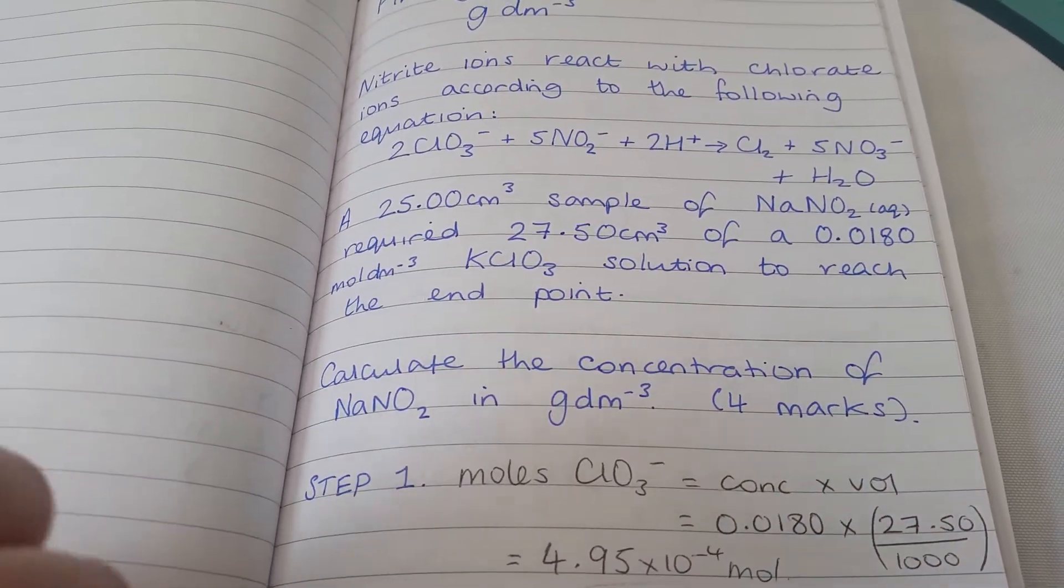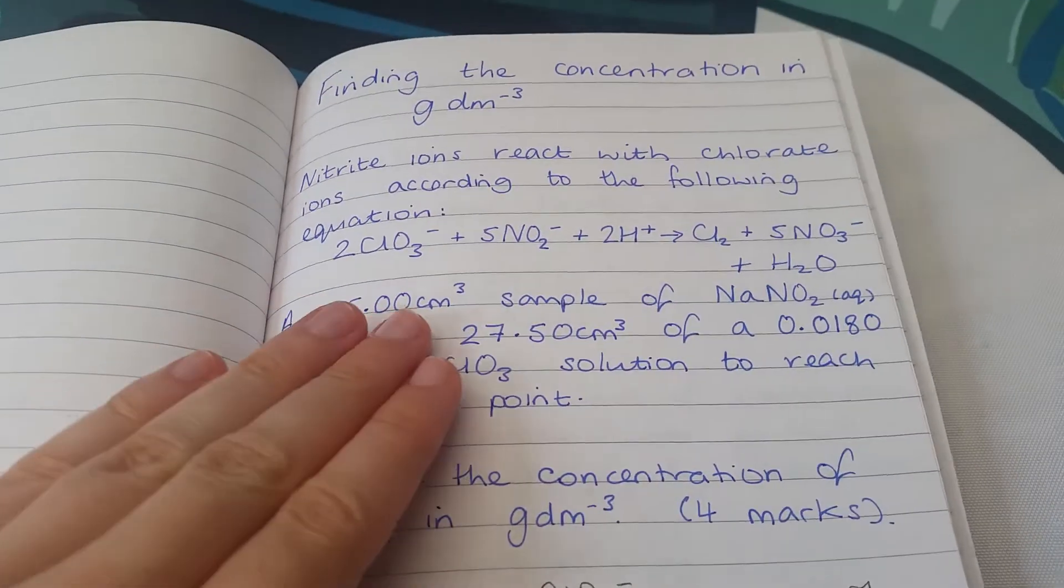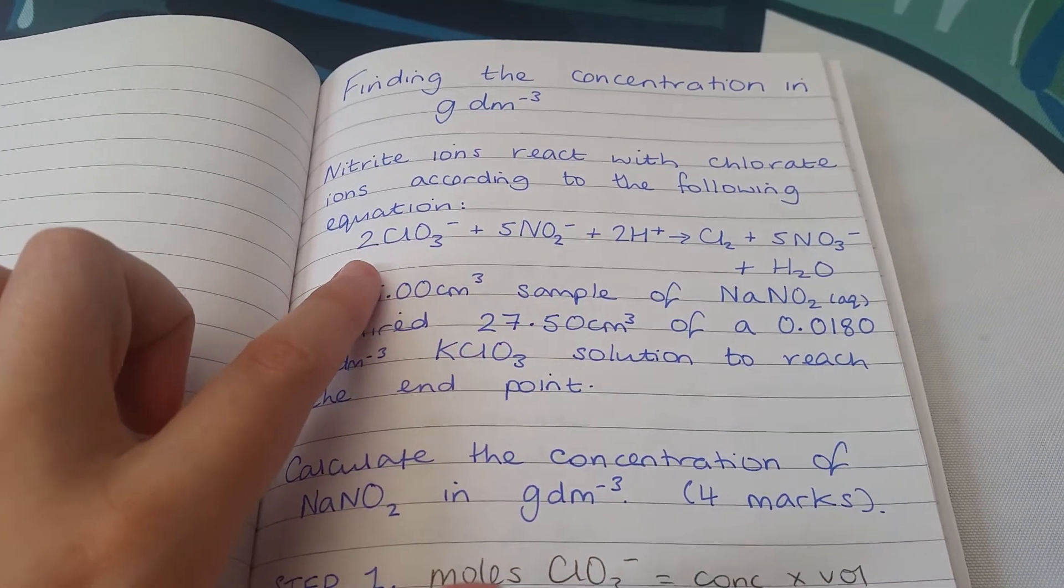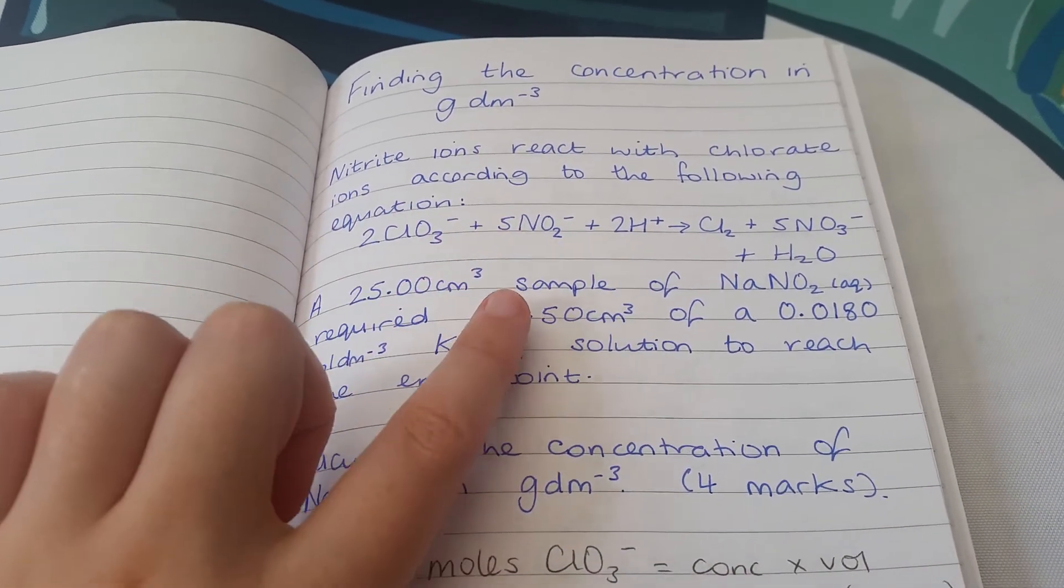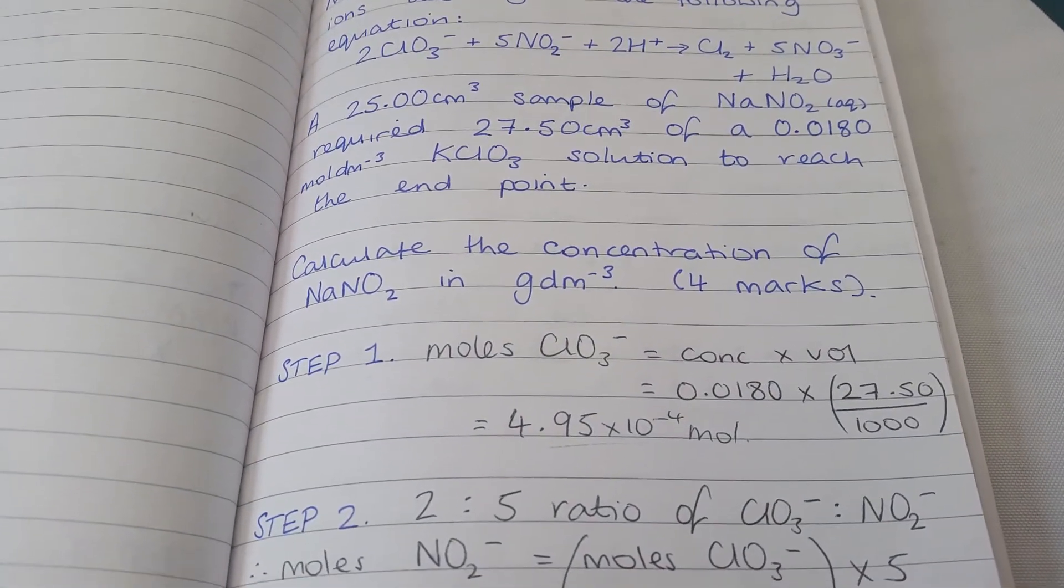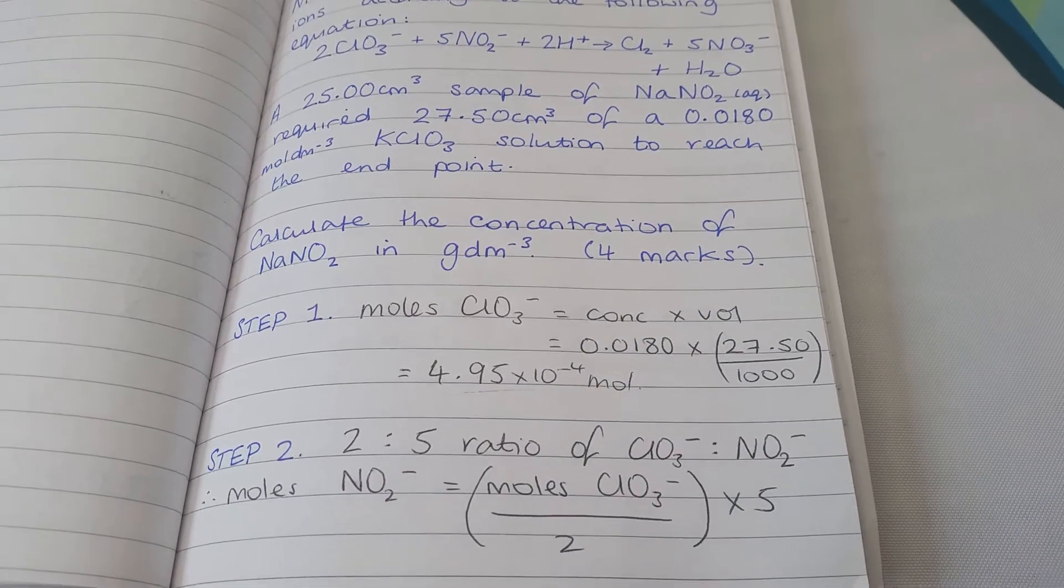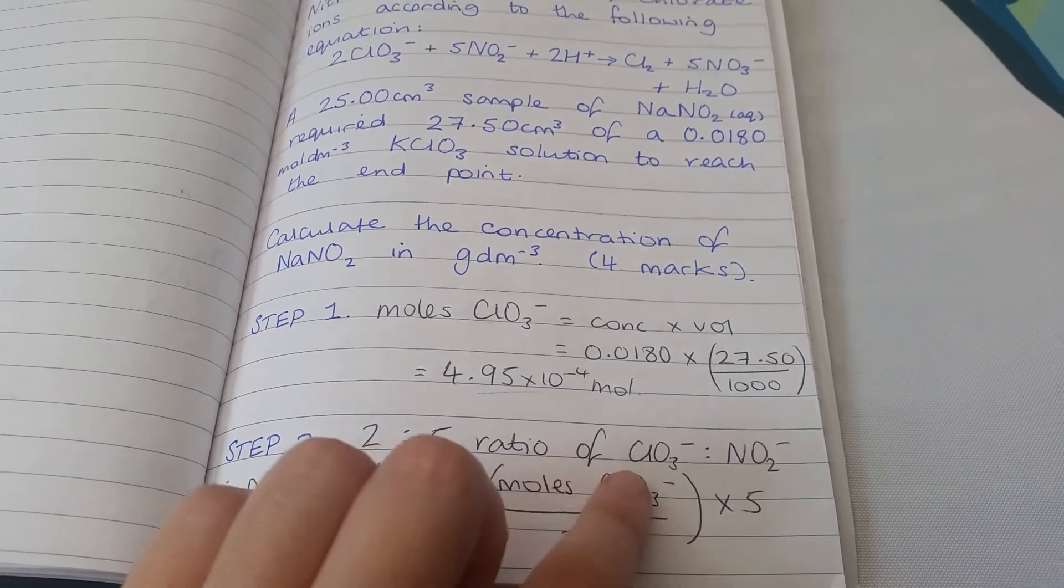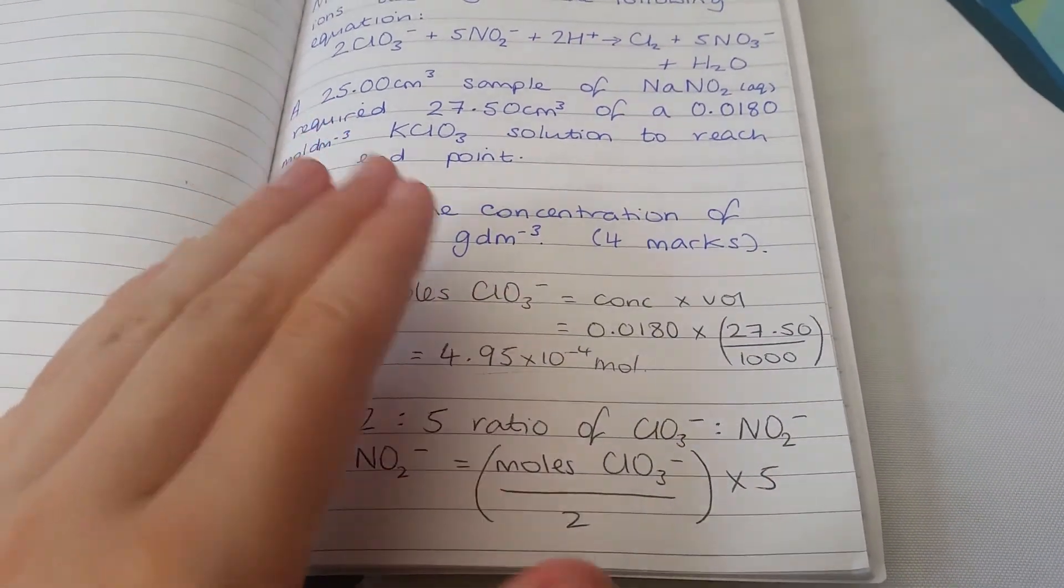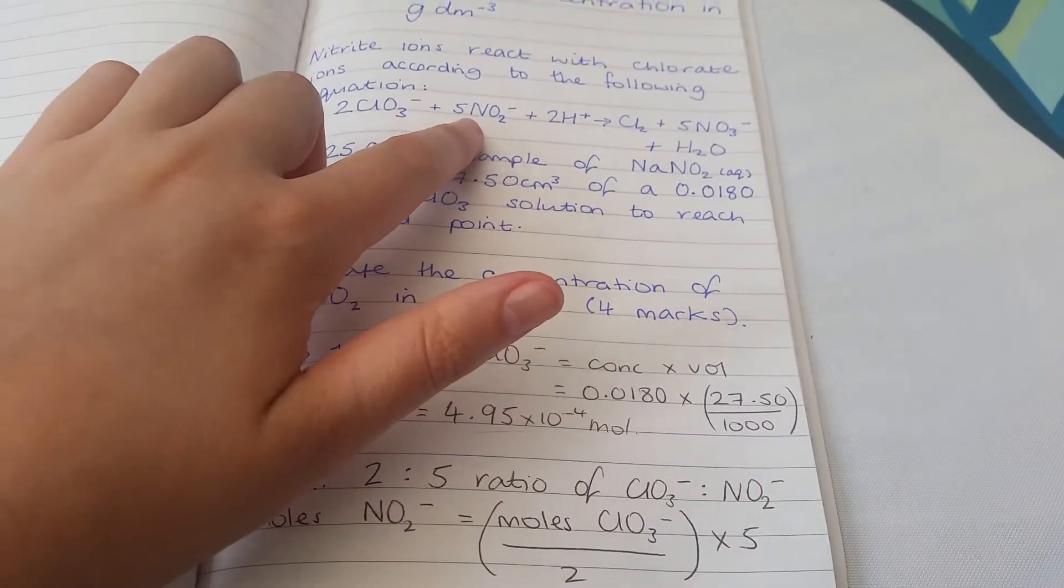After we've calculated moles of the chlorate, we look at the ratios in the balanced equation. We've got 2 moles of chlorate to 5 moles of nitrite. We can use that ratio to get the moles of the nitrite - divide the moles of chlorate by 2 to get one equivalent, then multiply by 5 to get the nitrite.